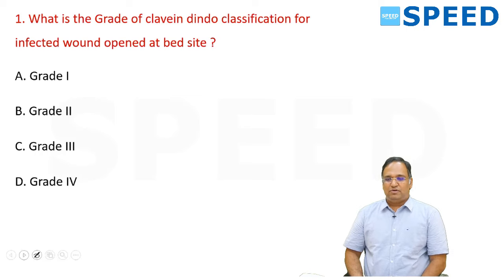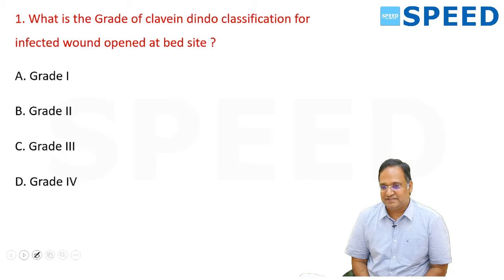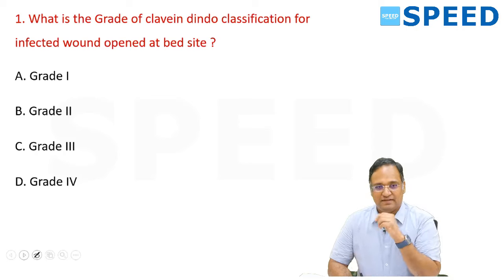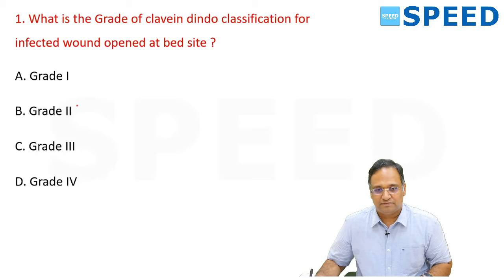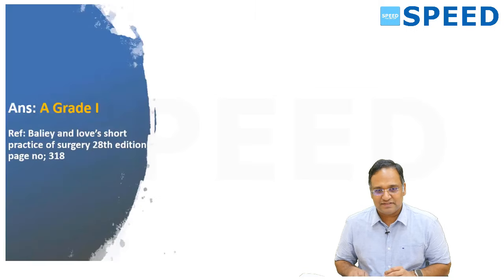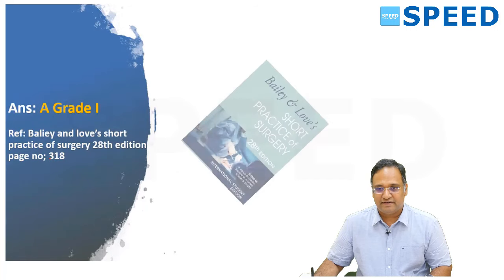For every question, you will type the alphabet to say what the answer is. What is the grade of Clavien-Dindo classification for an infected wound opened at a bedside? The right answer for this question is grade 1. This is taken from Bailey and Love, 28th edition, page number 318.